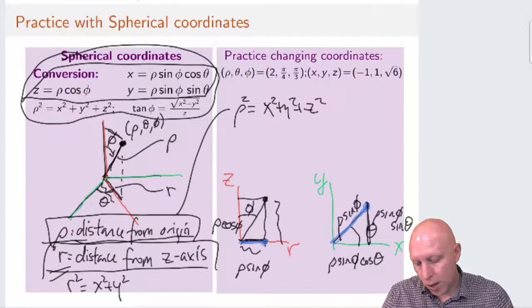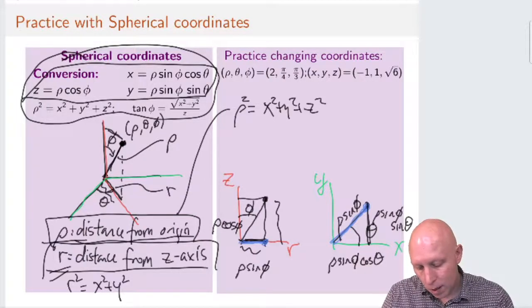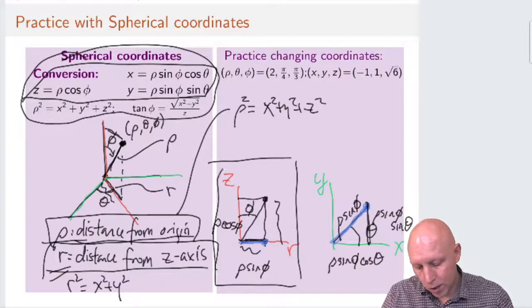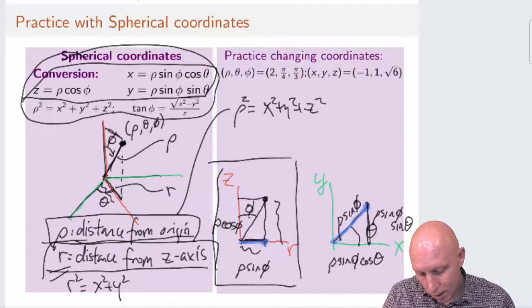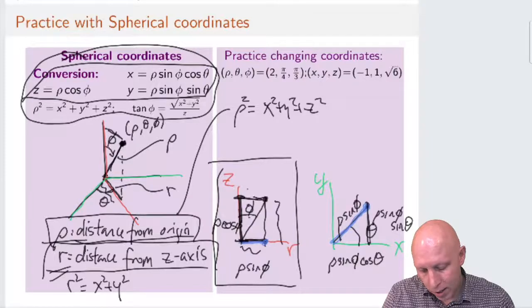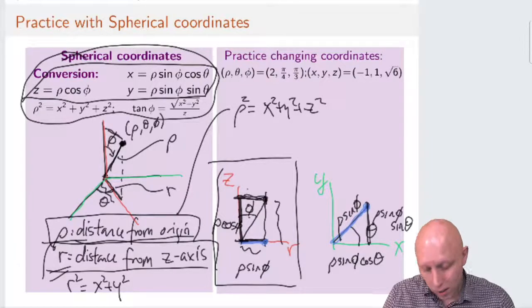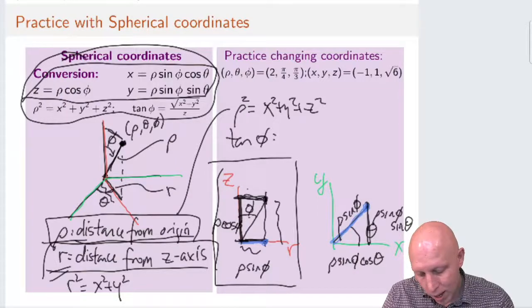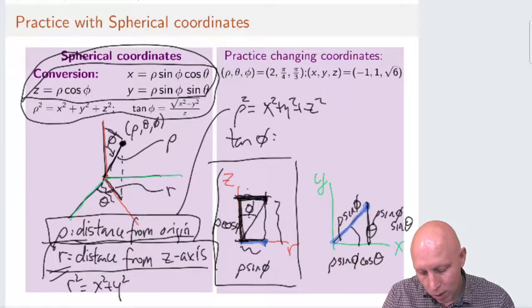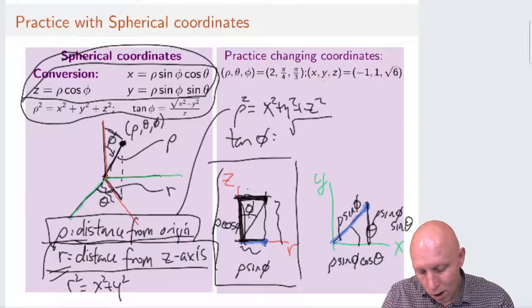So in this left picture, what we see is that phi can be represented as an arctangent. So tangent of phi can be represented as the opposite over the adjacent, and the opposite is this r divided by z.